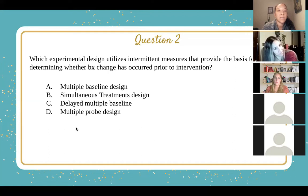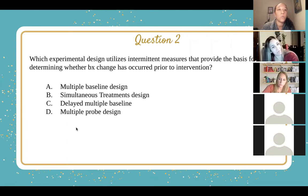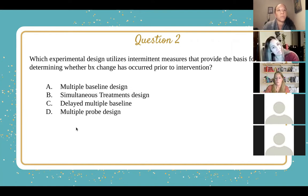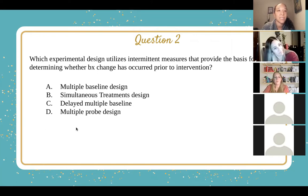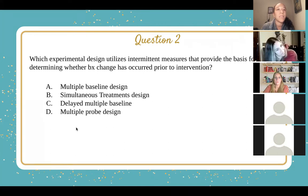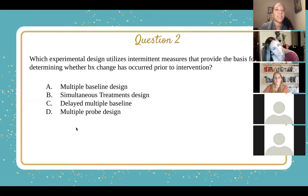Simultaneous treatments design is an AKA for alternating treatment design or multi-element design. That is when you may or may not have a baseline and you're rapidly alternating within one session or one treatment phase between two different treatments, never displaying the same one at the exact same time, to determine which is more effective. The delayed multiple baseline is similar to the multiple probe, but the baselines start at different times.